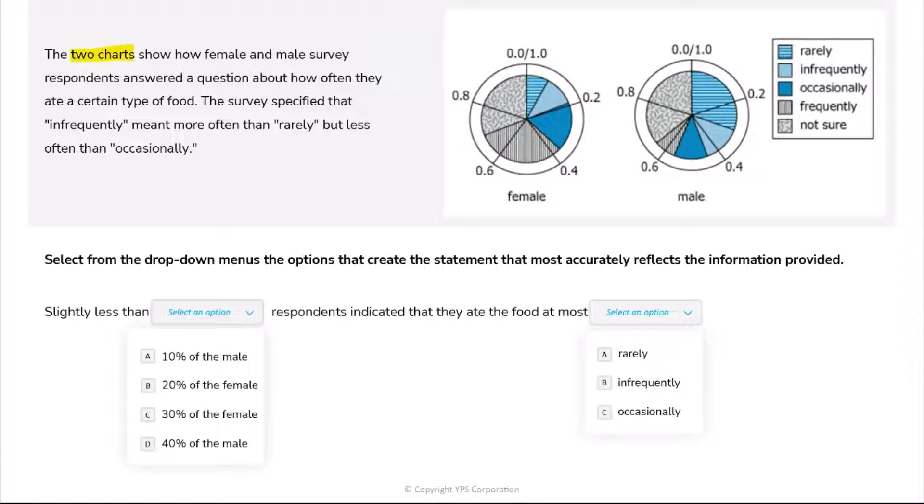Here we have two charts titled female and male, showing how female and male respondents answered a certain question. The question was about how often they ate a certain type of food, and when you see the legend here, these are answers to that question - how often do you eat it: I eat it rarely, or I eat it occasionally, and so on.